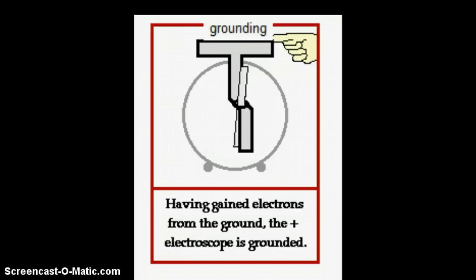So here come the electrons. Now we get to a point where enough electrons have come in from the ground that the imbalance in charge is gone, and now the electroscope is neutralized. So we've brought it back to a neutral, no charge situation.